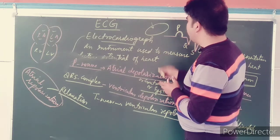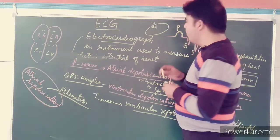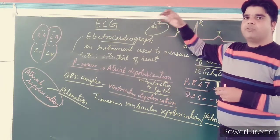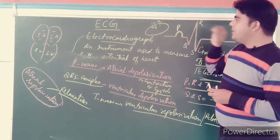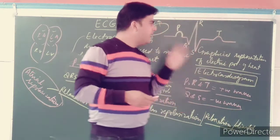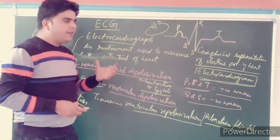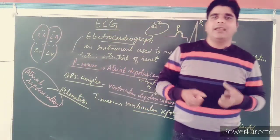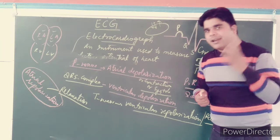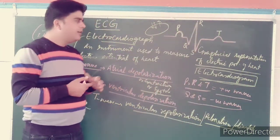Briefly: during depolarization, positive ions enter the cell, and during repolarization, positive ions exit the cell. For now, in ECG, you need to remember that P, Q, R, S, and T waves show us the depolarization and repolarization phenomena — how exactly the atria and ventricles of the heart contract and relax. We will meet in the next lecture with a new video. Till then, thank you very much.